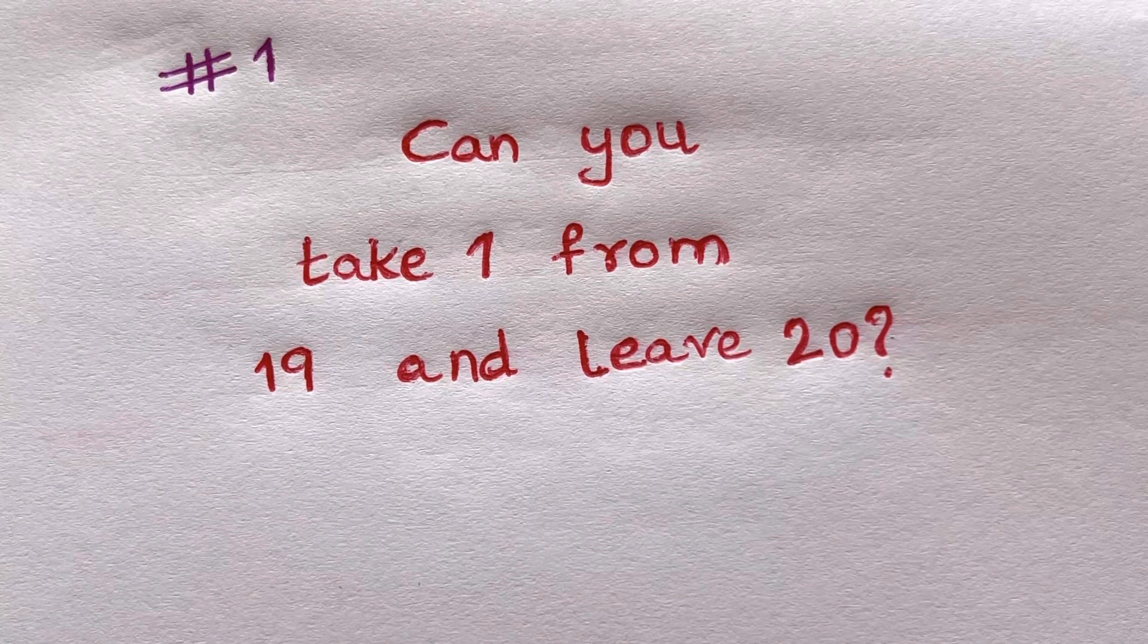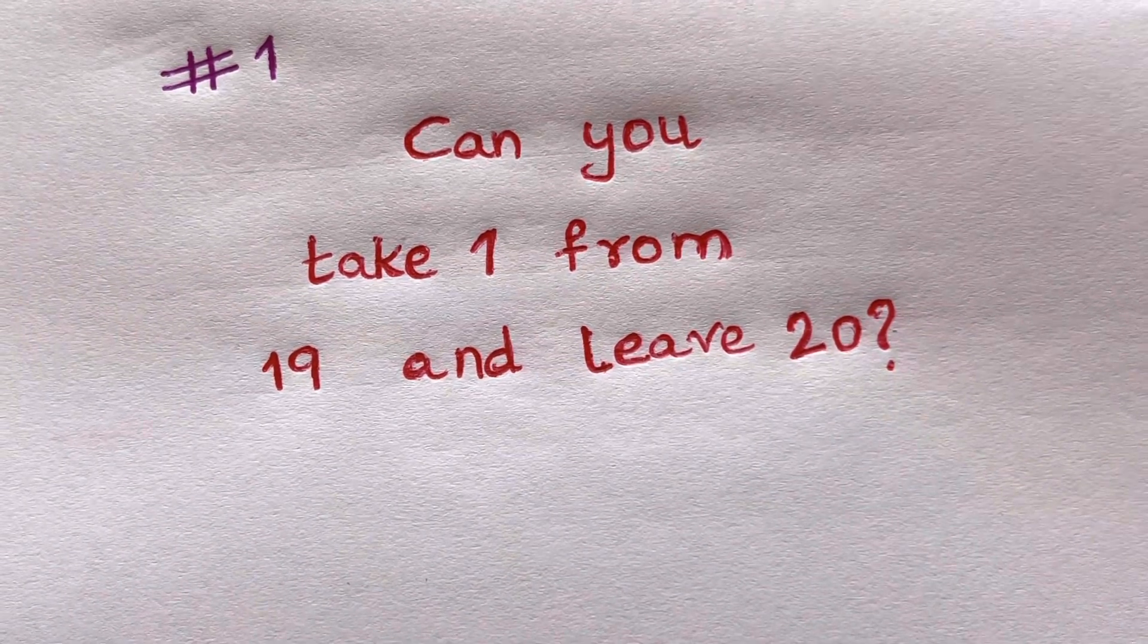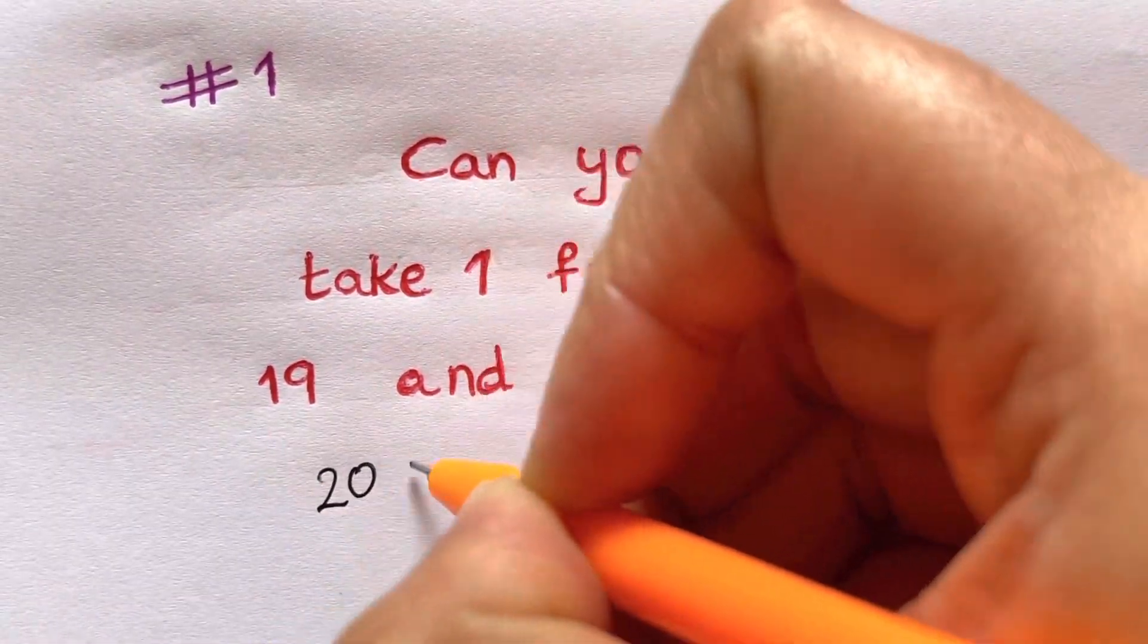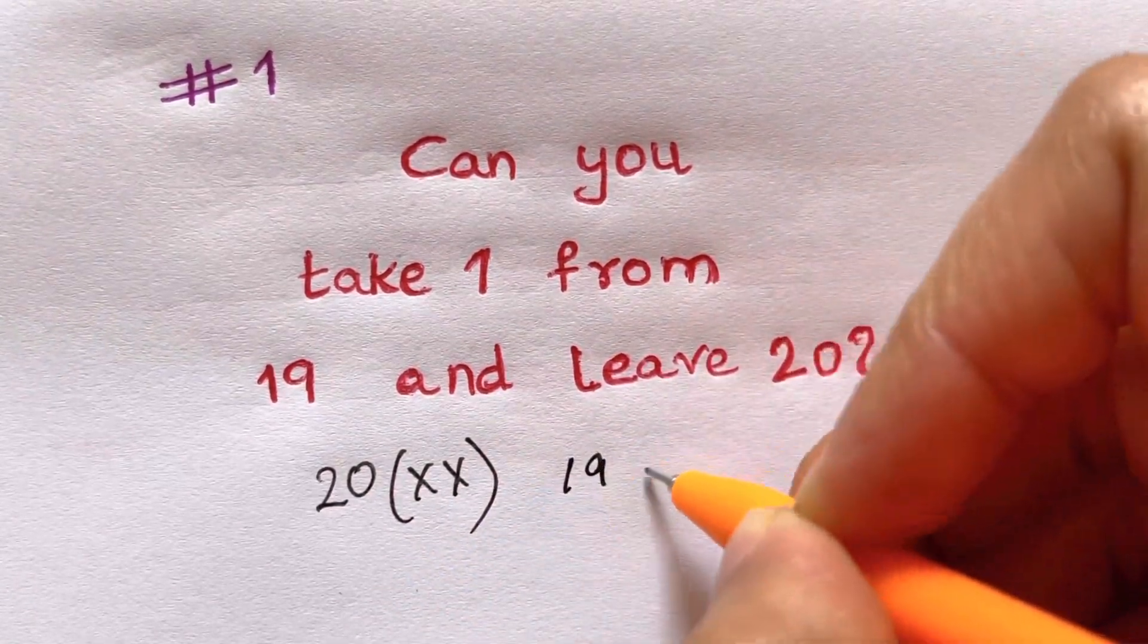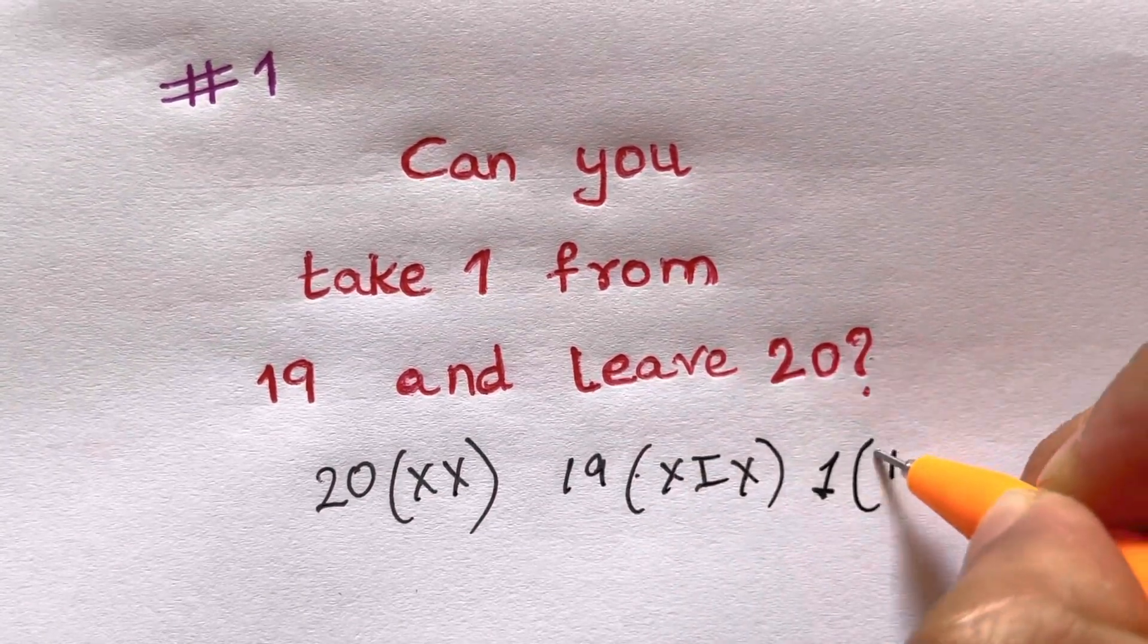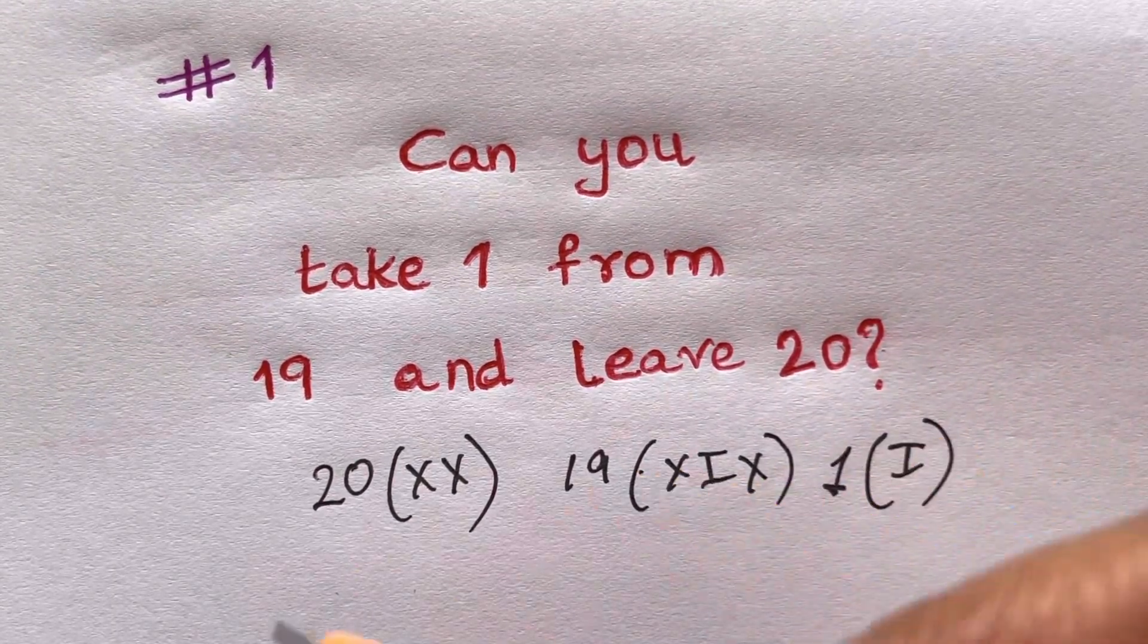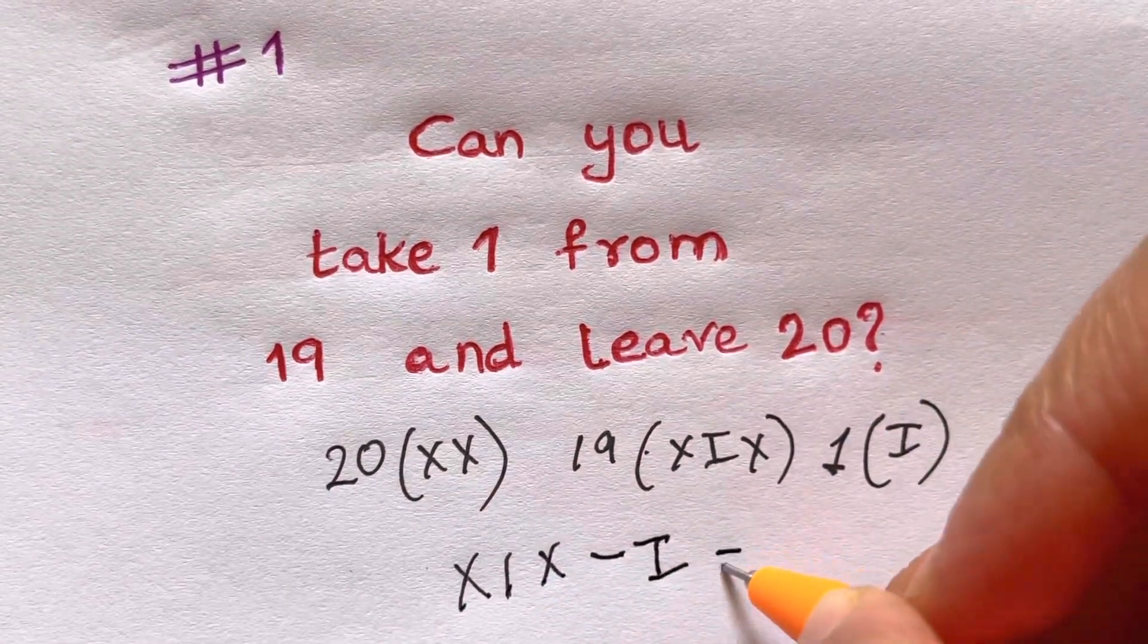So the answer is, you could just simplify using Roman numerals. 20 can be written as XX, and 19 can be written as XIX, and 1 is simply I. So if you take away I from XIX, you'll be left with XX. That's your answer.